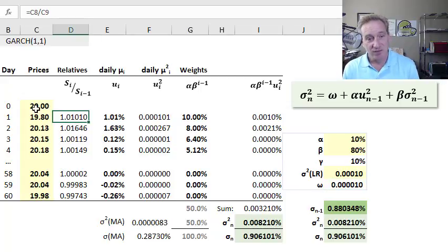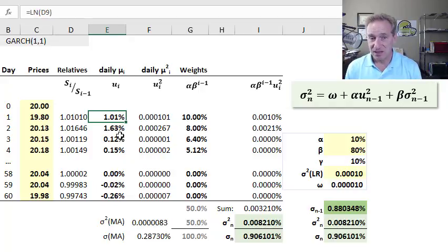You may recall, we divide a price by the previous day, and that gives us the price or wealth relative. And so that's a series of values that would be pretty close to 1, a little above, a little below. We're only using daily periods here. And then the natural log of those price relatives gives us the series of daily log returns, by definition, continuously compounded.